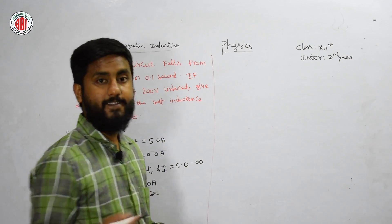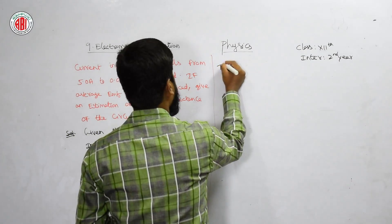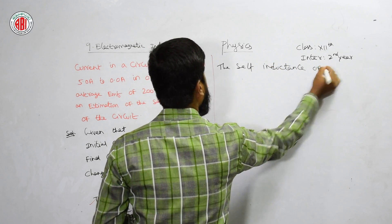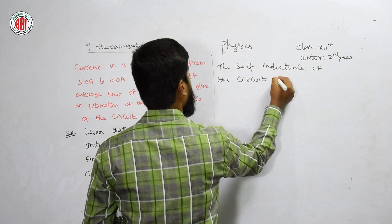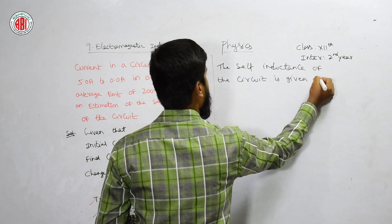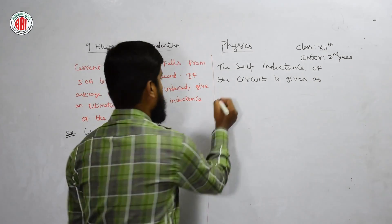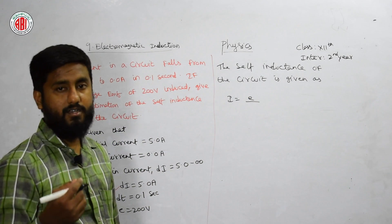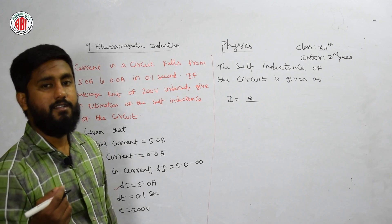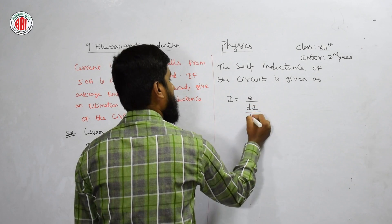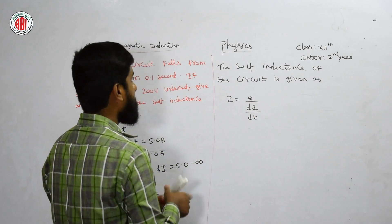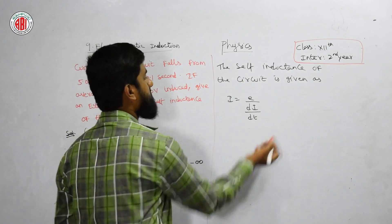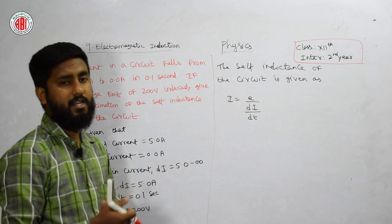The self-inductance of the circuit is given as: we have a formula, L equals e divided by di by dt. We have many formulas with us, among this, this is one. This is class 12, so we just need to substitute the values and we will get the answer.